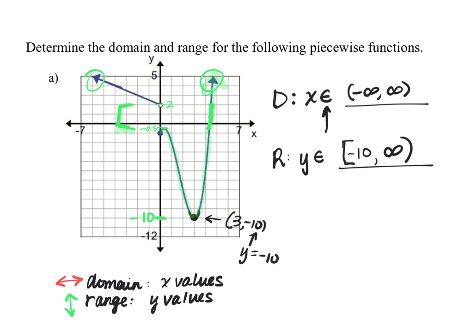Our y values go from negative 10 all the way to positive infinity with no gaps, so the range is [-10, ∞). Remember, we always use parentheses on both positive and negative infinity because they are not actual finite numbers — parentheses are always used for negative or positive infinity.